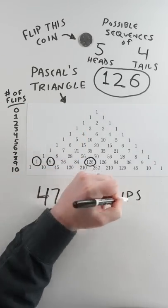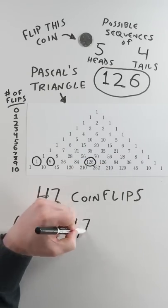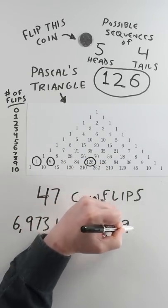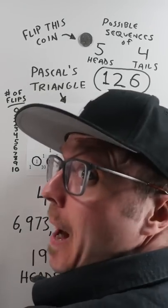47 coin flips generate 6,973,199,770,790 possible arrangements of 19 heads and 28 tails. Now you know that. Okay, bye.